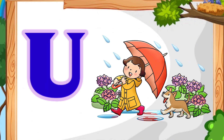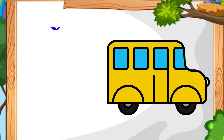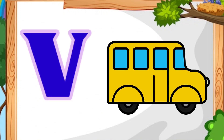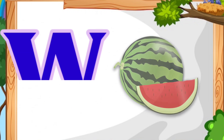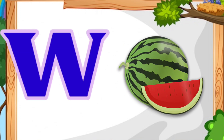U for umbrella. V for van. W for watermelon.